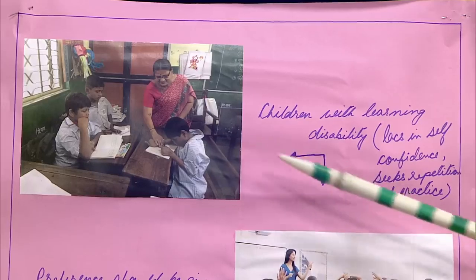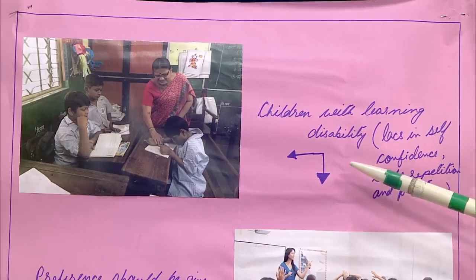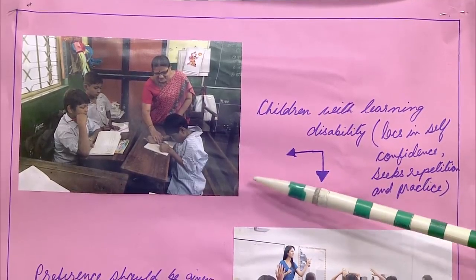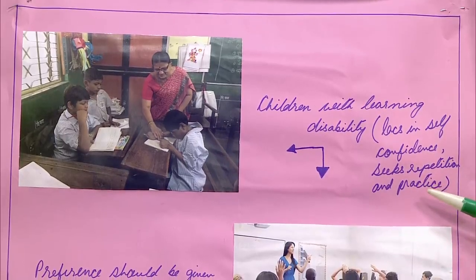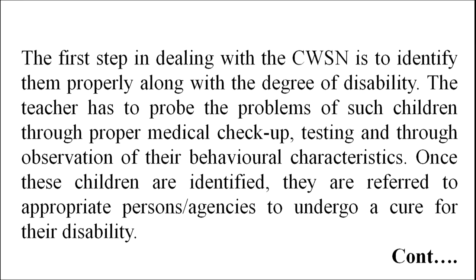The third picture that I have pasted here is of children with learning disabilities. The main features of children with learning disabilities are lack in self-confidence, seeks repetition and practices. The first step in dealing with the CWSN is to identify them properly along with the degree of disability. The teacher has to probe the problem of such children through proper medical check-up, testing, and through observation of their behavioral characteristics.